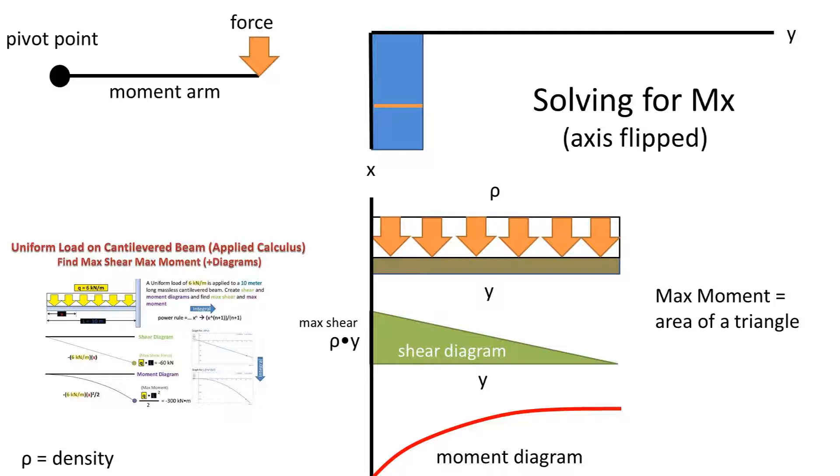So recall from that video that the max shear force would be the density times the length, which in this case is y. Also recall that the area of the shear diagram is the max moment for the cantilever beam.